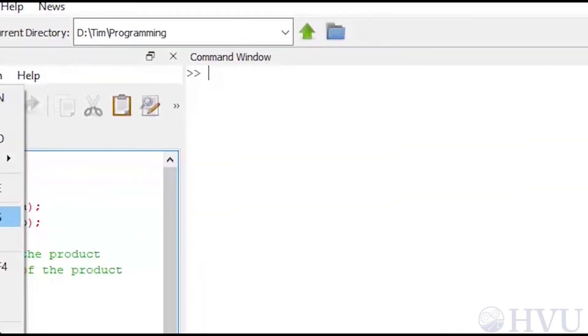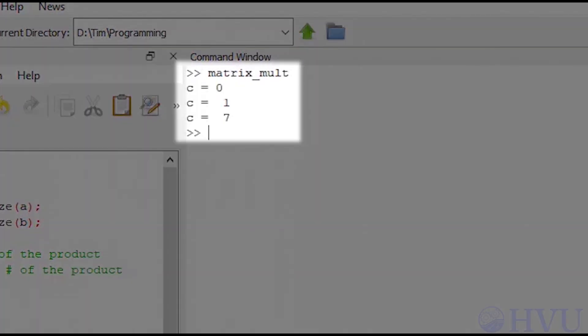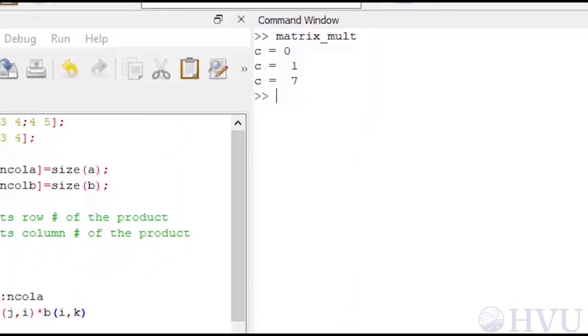Now, I'll save the file and run it. The first time through the loop, I multiply 1 times 1 and add it to 0, so c equals 1. The second time through the loop, I multiply 2 times 3 and add that to 1, which gives c equals 7. Since that looks right,